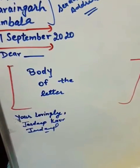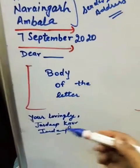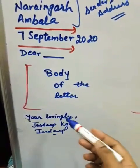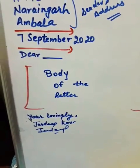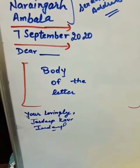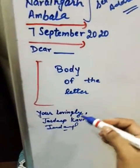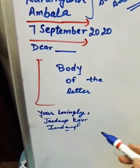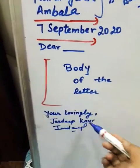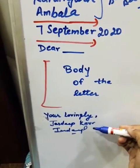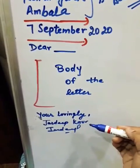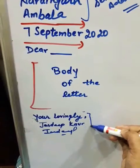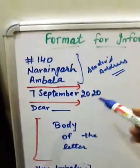Then the closing phrase will come: 'Yours lovingly.' If you are writing to your father, mother, or friend, you can write 'Yours lovingly,' or 'Your loving son,' 'Your loving daughter,' 'Your loving niece,' 'Your loving nephew.' Then your full name — like I have written my name 'Deepika.' Then your signature. So this will come in the closing phrase.